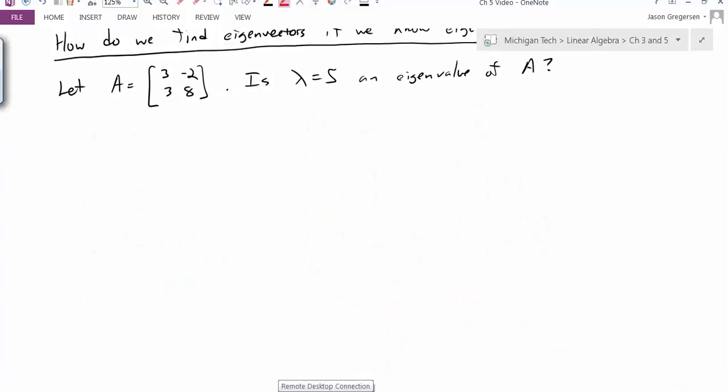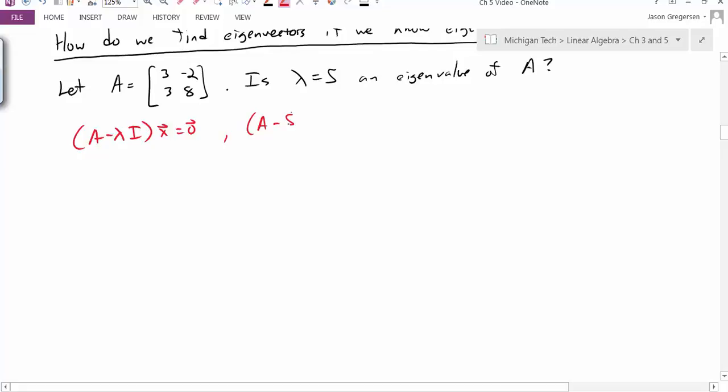So if we look back at our original question, now I'm starting with this equation: A minus lambda I times my eigenvector equals zero. And now I'm going to plug in my specific value for lambda: A minus 5 times I times the eigenvector equals zero. And I actually would write this out.